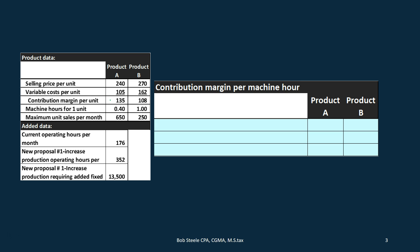But we often have a constraint of time, whether in labor hours or machine hours. So it's a good idea to identify that constraint and calculate the contribution margin per machine hour. In this case it takes 0.4 hours to produce product A and one hour to produce product B in the constrained machine-hour area, so we want to take that into consideration.